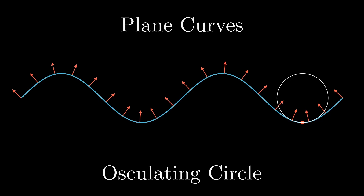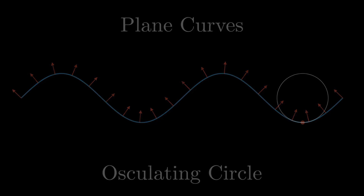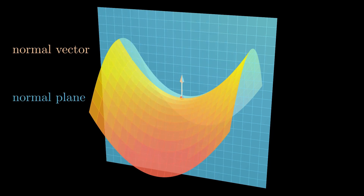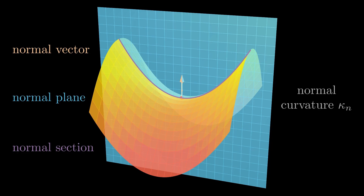But now let's return to the question of surface curvature. For a smooth surface, we can find a normal vector at any point — a vector that is perpendicular to the surface. Any plane containing this vector is called a normal plane. The intersection of a normal plane with the surface is a plane curve, called a normal section, and we can calculate the curvature at our point, which is called the normal curvature.